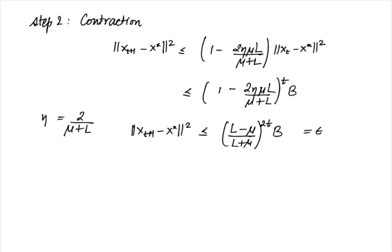Equating it to epsilon and then repeating the analysis as we did for the quadratic case we again see that the oracle complexity is given by order of kappa log b by epsilon for kappa much much greater than 1.